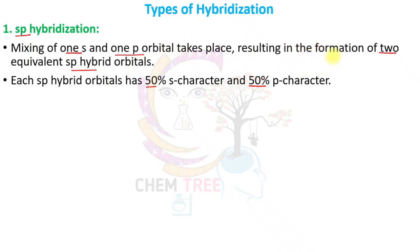In SP hybridization, only 1s orbital is taking part and the total orbitals are 2. So: 1/2 × 100 = 50%. Like this, we can calculate the percentage of S character and P character.